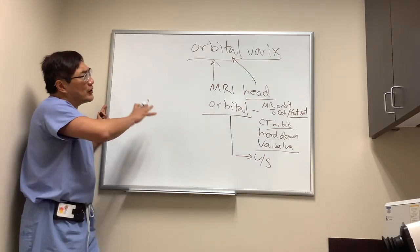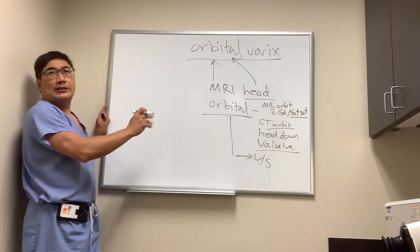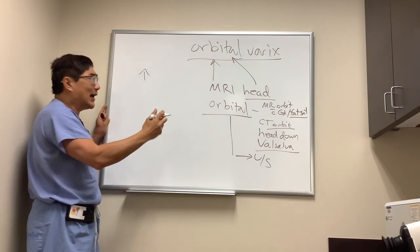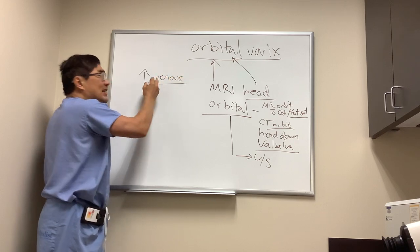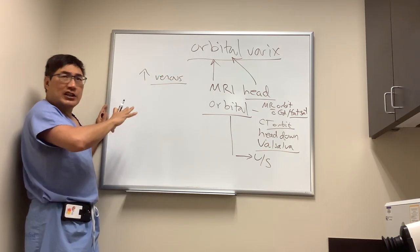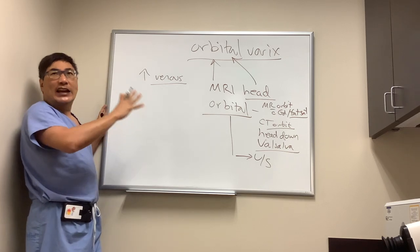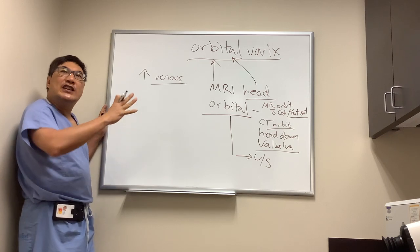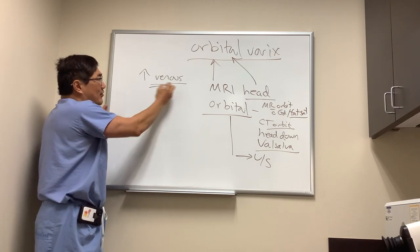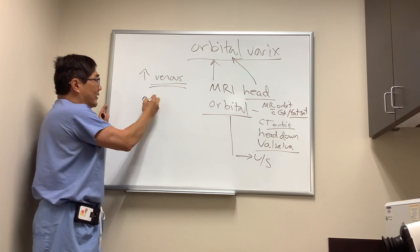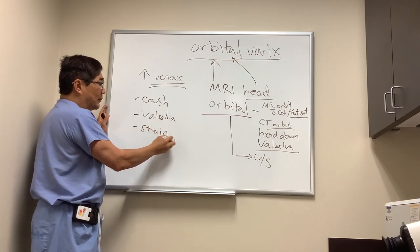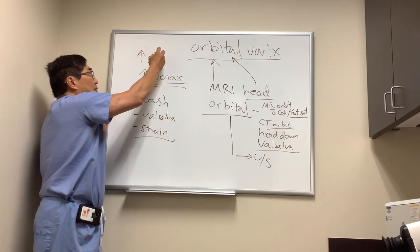Orbital varices typically have a very stereotyped presentation: an increase in proptosis, a bulging of the eye, and a sensation of pressure behind the eye. This is because there's an increase in the venous side of the equation. A varix is thought to be a hamartomatous lesion — often congenital — essentially a dilated vein. It's a post-capillary venous malformation that affects the low-pressure venous side, so anything that increases venous pressure is going to make it bigger. That's why coughing, Valsalva, sneezing, or straining will cause the subjective complaint of increased bulging of the eye.